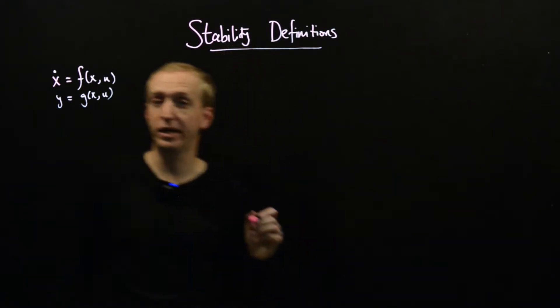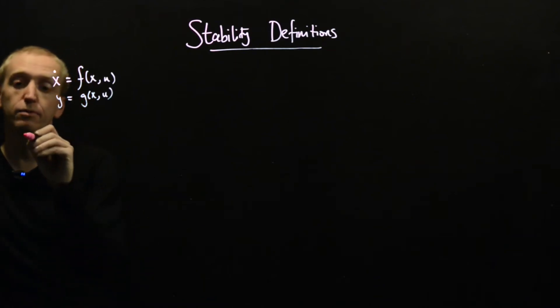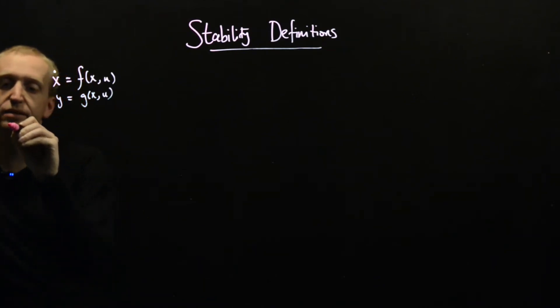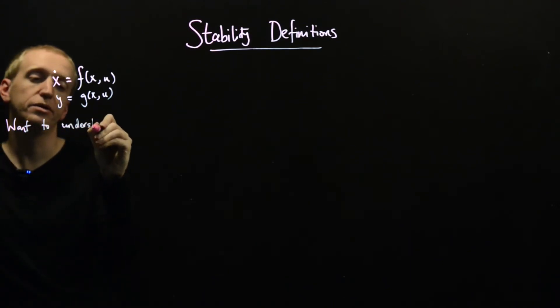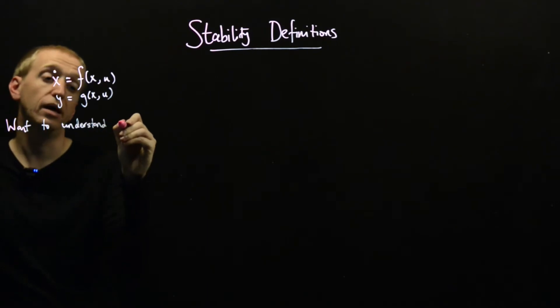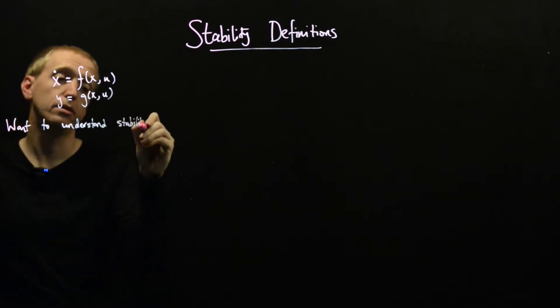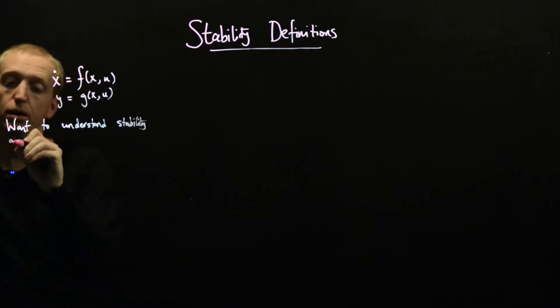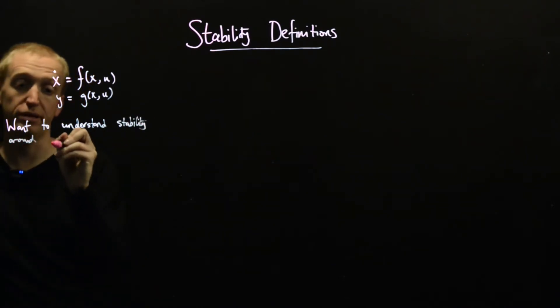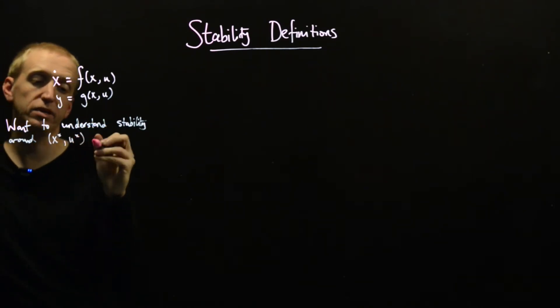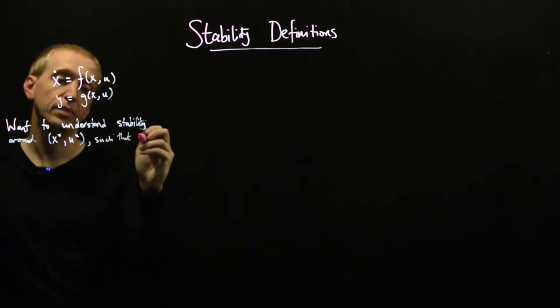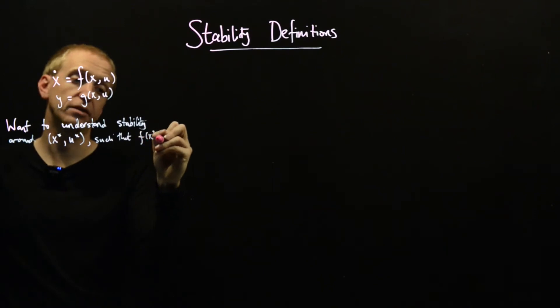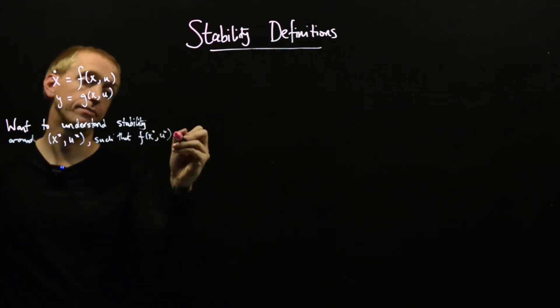So we're talking about an equilibrium point. So we want to understand stability around an equilibrium point, which is just a pair of vectors, x star, u star, such that f of x star, u star equals zero.